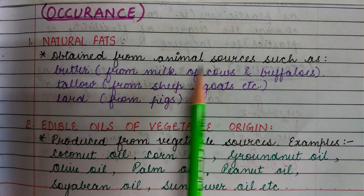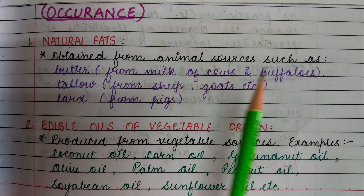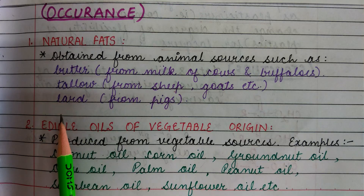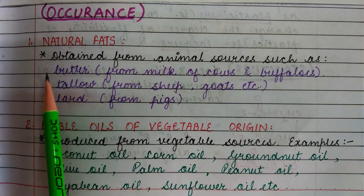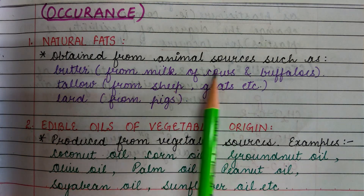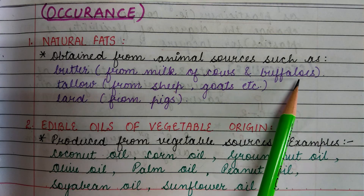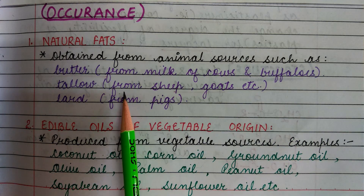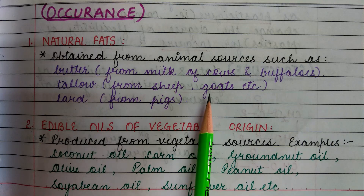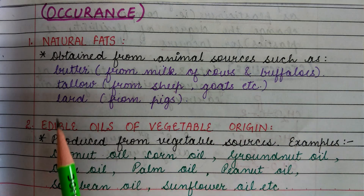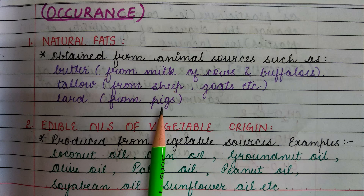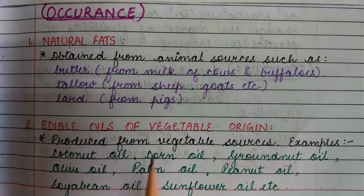Next, occurrence. First, natural fats: natural fats are those which are obtained from animal sources, such as butter, tallow, and lard. Butter is obtained from the milk of cows and buffaloes. Tallow is obtained from the abdomen of sheep or goats. Lard is obtained from pigs.